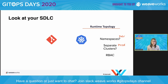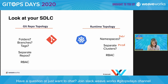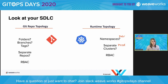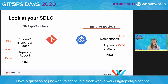For example, you might have a single development cluster with multiple namespaces, each app team getting its own namespace. But when it comes to prod, you might want separate clusters for each of your microservices because you want to set up those failure domains. On the other side is what I call the Git repo topology — folders, branches, tags, separate repositories, and RBAC. You're thinking about your team structures, where you need separation of duties, and what different teams you have.